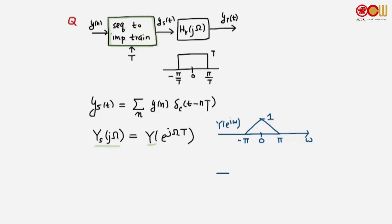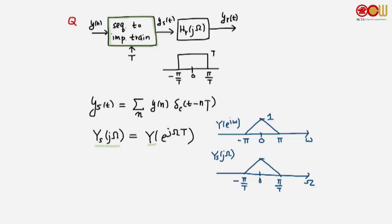If this is the Fourier transform of y, then Y_s is simply a frequency-scaled version of Y(e^jω). Y_s(jΩ) is a frequency-scaled version, where π becomes π/T and −π becomes −π/T, and the height remains the same. Y(e^jω) is periodic with period 2π, and Y_s(jΩ) is periodic with period 2π/T, continuing on the other side as well.